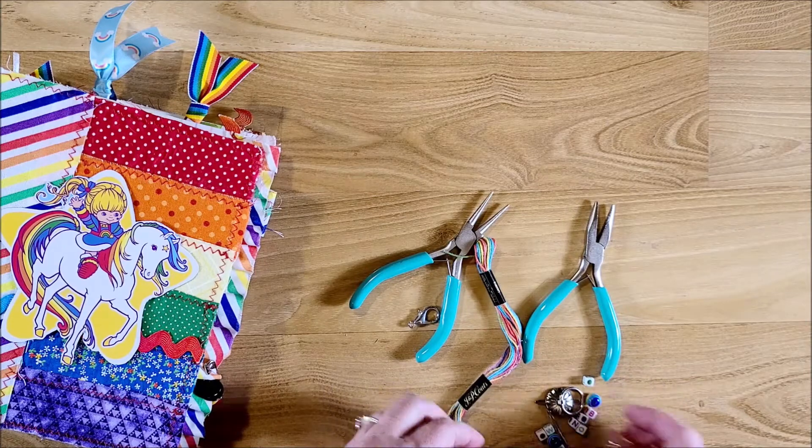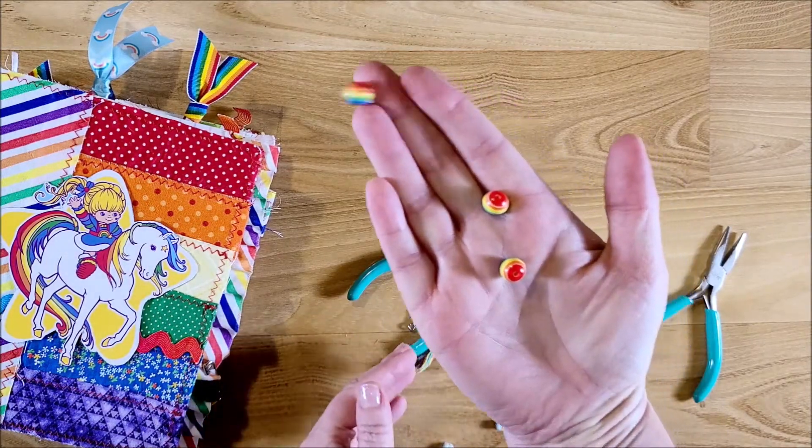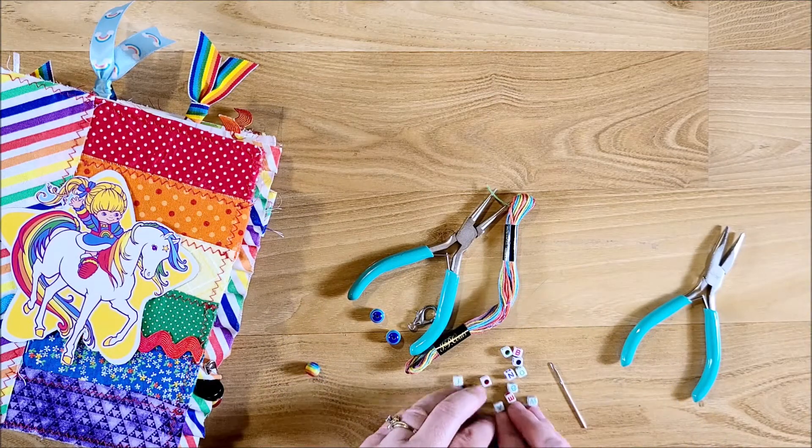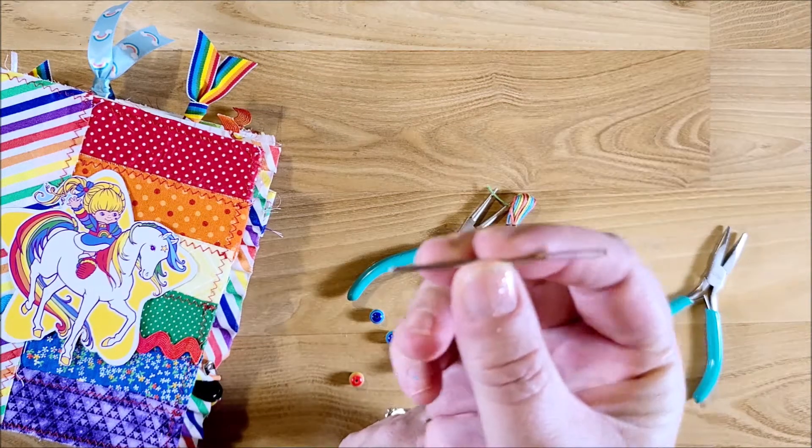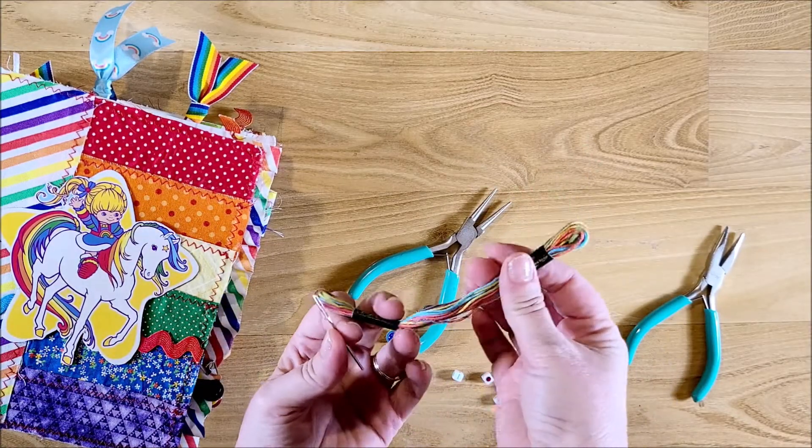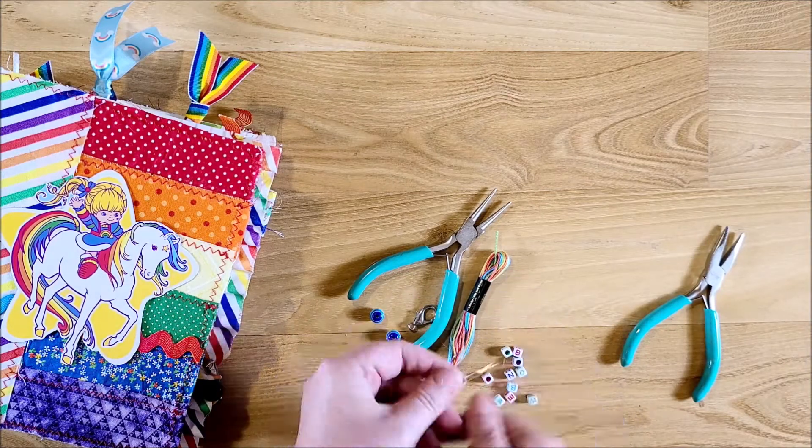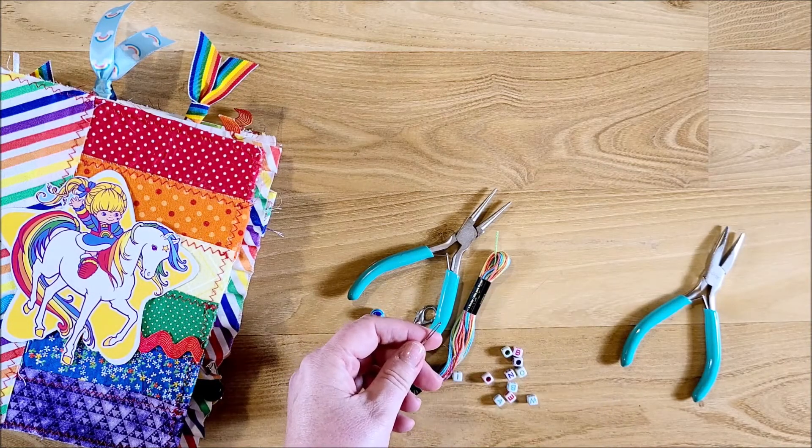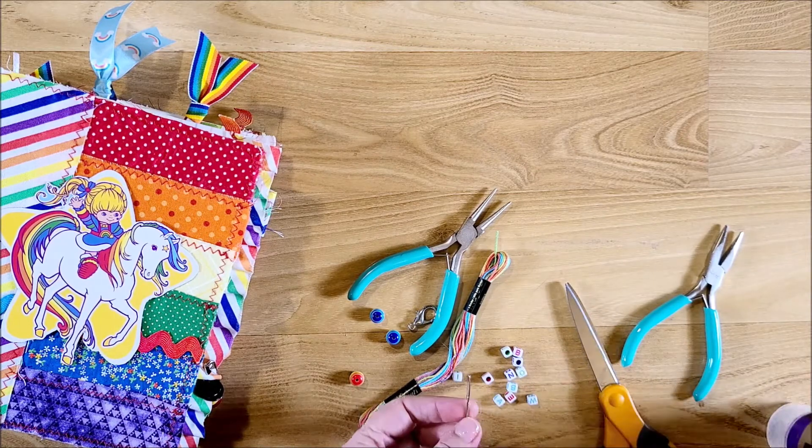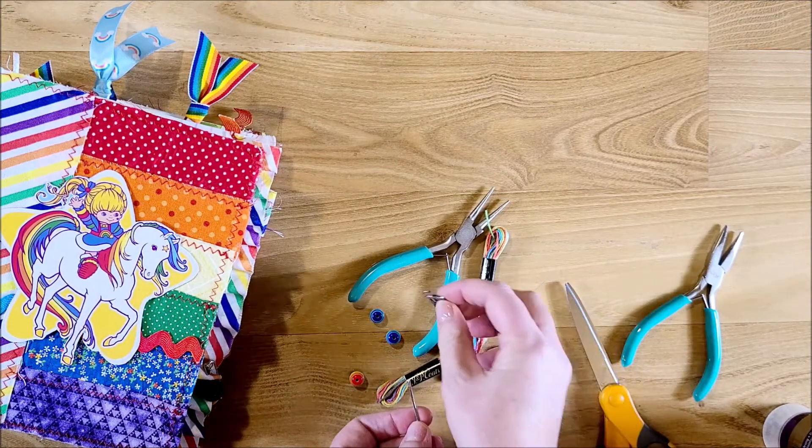And then for the beads, I have three rainbow beads and then I have the letter beads that spell out rainbow bright. I have a needle. This one is a big enough head that you can put your embroidery thread or twine, whatever you want to use to go through the beads. It's easier to string it through everything using the needle. And then you just need some scissors and a little bit of tacky glue to kind of glue the very end that you cut off after you tie it onto the lobster clasp.